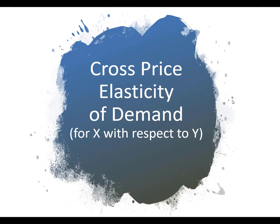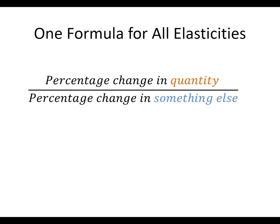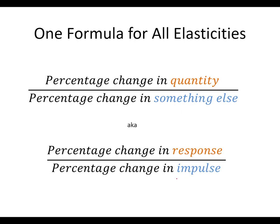This video is going to be about cross-price elasticity. Remember, there is one formula for all elasticities: a percentage change in quantity divided by a percentage change in something else — that something else is the impulse. That's what causes us to change our behavior, and the quantity on top is our response. The particulars for this elasticity will be coming up.